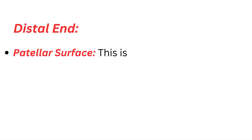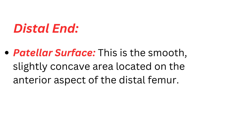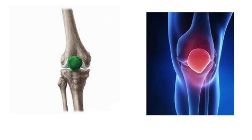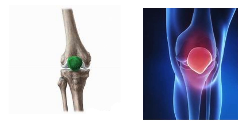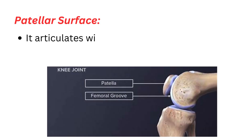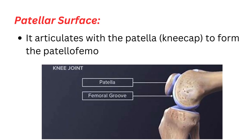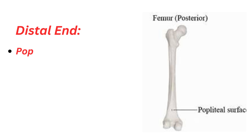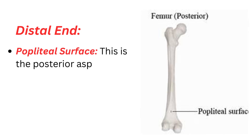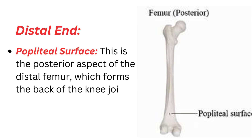Patellar surface: this is the smooth, slightly concave area located on the anterior aspect of the distal femur. It articulates with the patella, or kneecap, to form the patellofemoral joint. Popliteal surface: this is the posterior aspect of the distal femur, which forms the back of the knee joint.